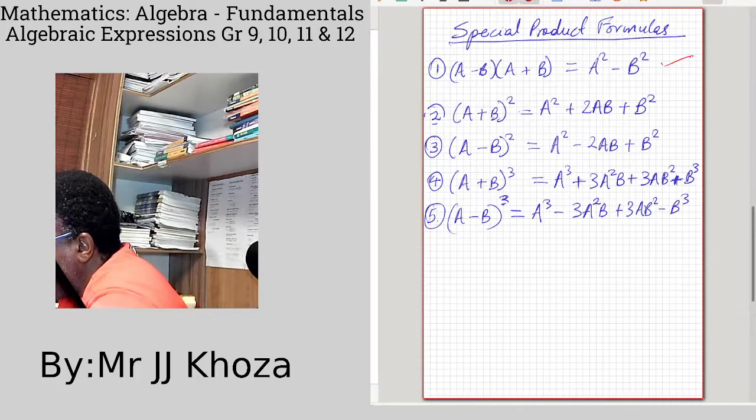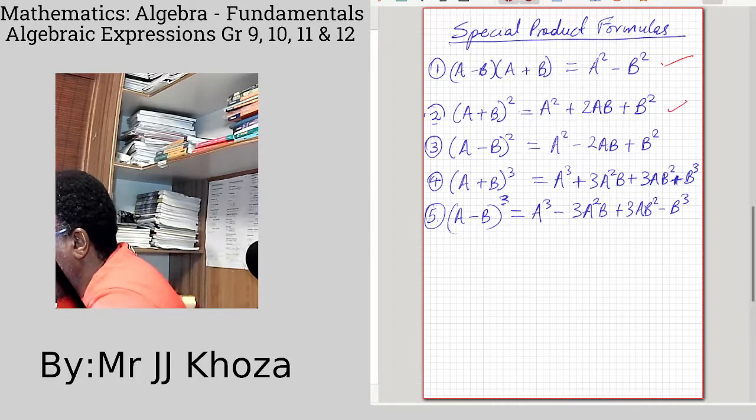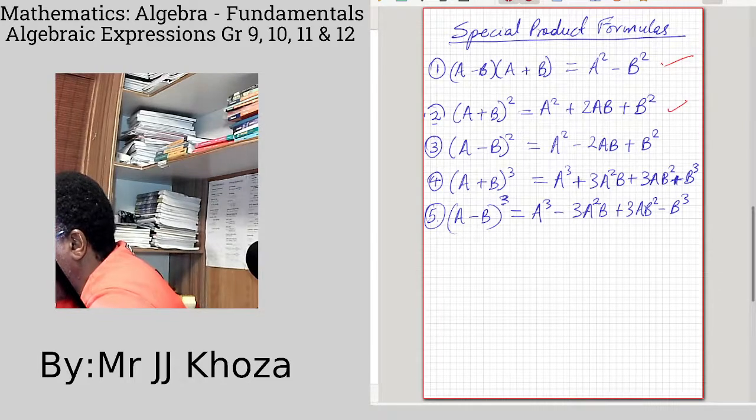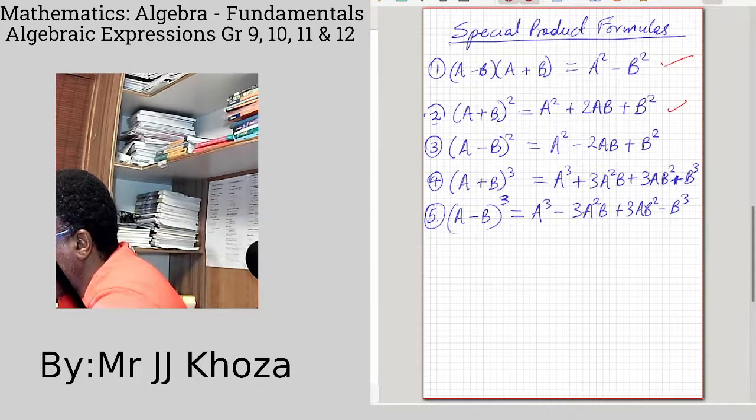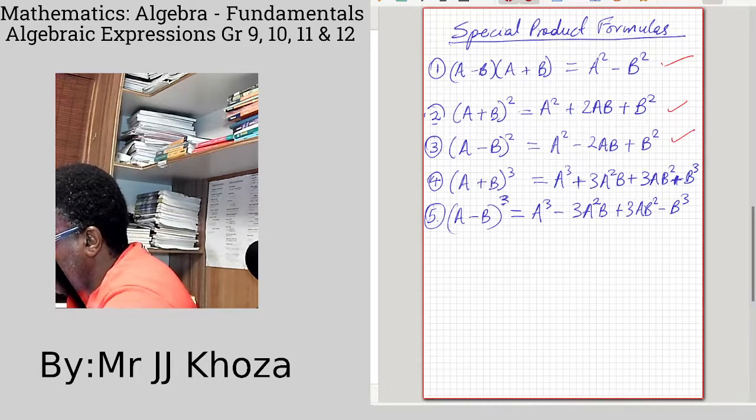And if you've got a plus b all to the power 2, this is what you get. You expand it and you do the distribution, the distributive property. This is all about distributive property, this is all the work of distributive property.